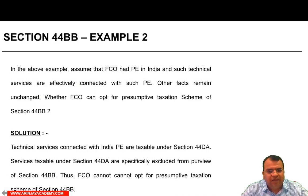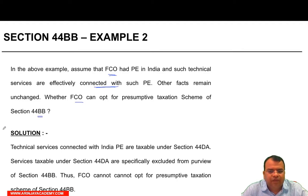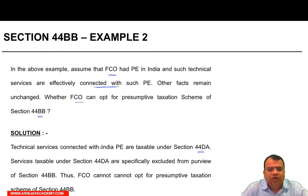In the above example, assume that EFCO has a PE in India and such technical services are effectively connected with such PE — other facts remain unchanged. Whether EFCO can opt for the presumptive taxation scheme of Section 44BB? Let us now discuss Section 44DA.